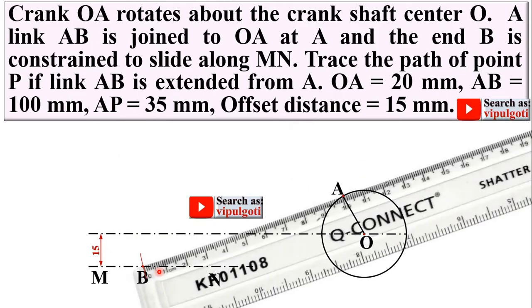Now join AB and extend it, because here it is given that AB is extended from A end. This extended distance is given as AP equal to 35 mm. So AB is 100 mm, and you extend it up to 35 mm more, meaning 135 mm total. Mark point P at 135 mm distance.